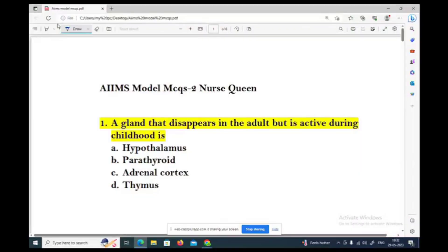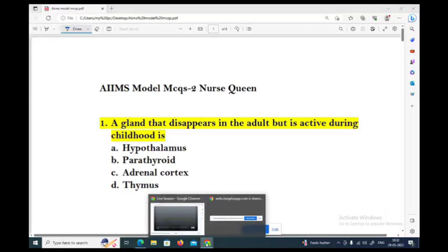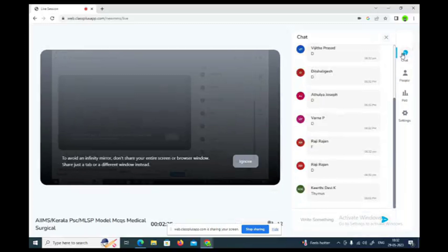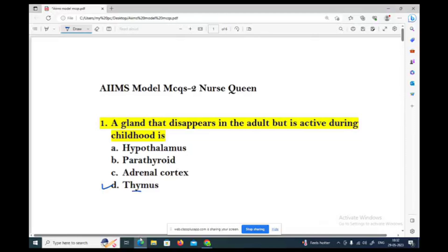A gland that disappears in the adult but is active during childhood. Options: Hypothalamus, Parathyroid, Adrenal Cortex, Thymus. The correct answer is option D, Thymus gland. Very good.